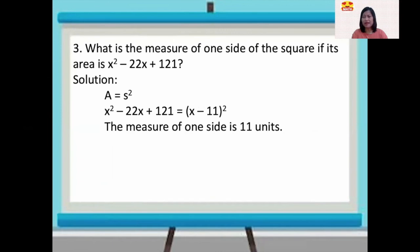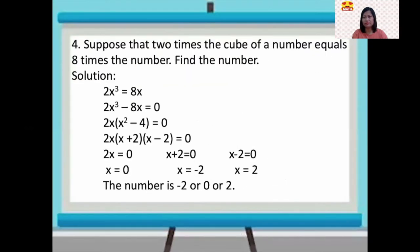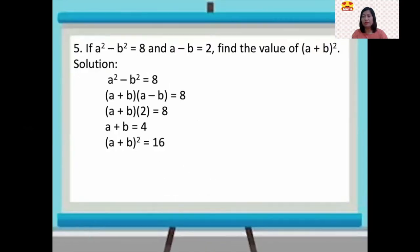The measure of one side is 11 units. Number four, the number is negative two, or zero, or two. And number five, the value of (A plus B) squared is 16. That's all for now, mathematics lovers. Don't forget all the things you have learned. Have fun in solving!